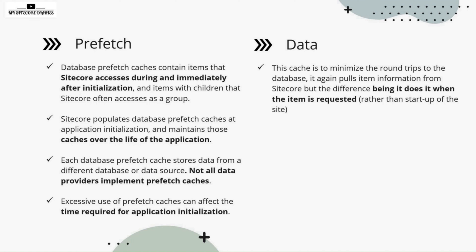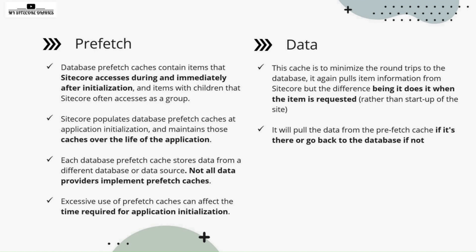So if you are requesting some item, that item data is fetched from the database and stored into the data cache. This minimizes the round trips to the database. The difference between pre-page and data cache is: pre-page cache is built at the start of the application, whereas the data cache is built when the item is requested.